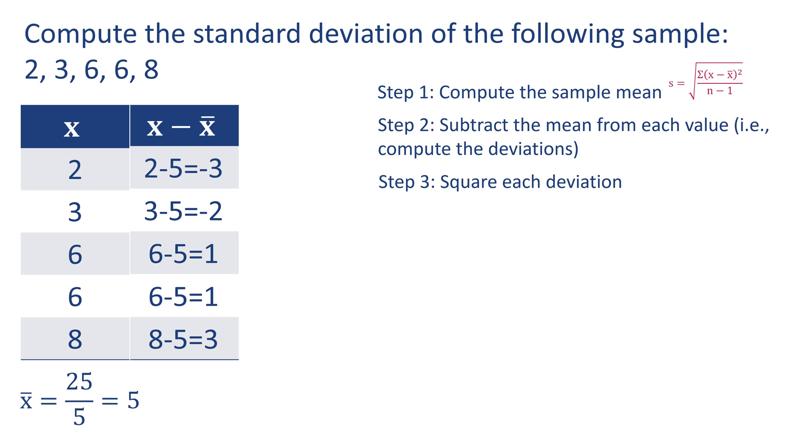Step 3: square each deviation. I'll add a third column for the squared deviations. Here, we're taking the value from the second column and squaring it. Recall that any number squared is a positive number. For the first observation, negative 3 squared equals 9. For the second observation, negative 2 squared equals 4. 1 squared equals 1, 1 squared equals 1, and 3 squared equals 9. These are squared deviations.